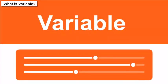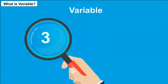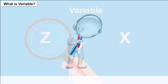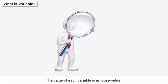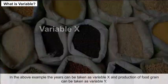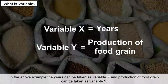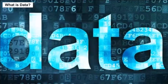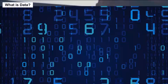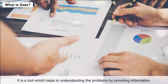What is a variable? Variables are values that keep on changing. They are represented by letters X, Y, or Z. The value of each variable is an observation. In the above example, the years can be taken as variable X and production of food grain can be taken as variable Y. Data is a tool which helps in understanding problems by providing information.